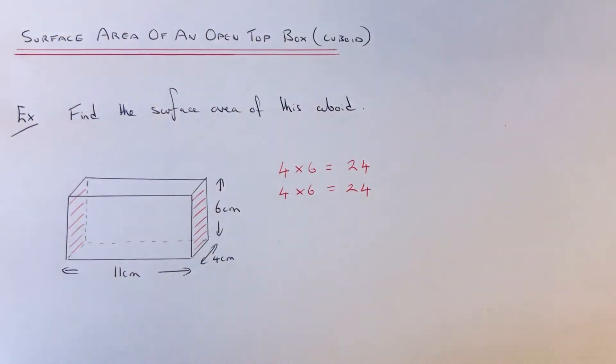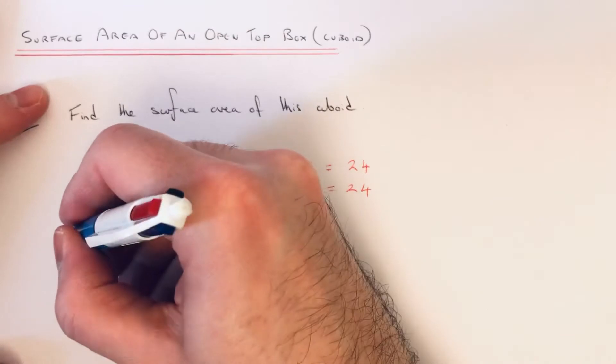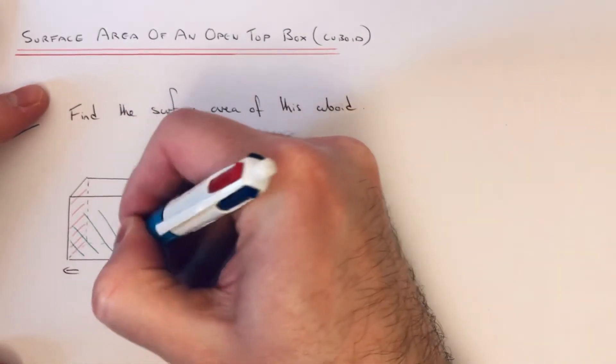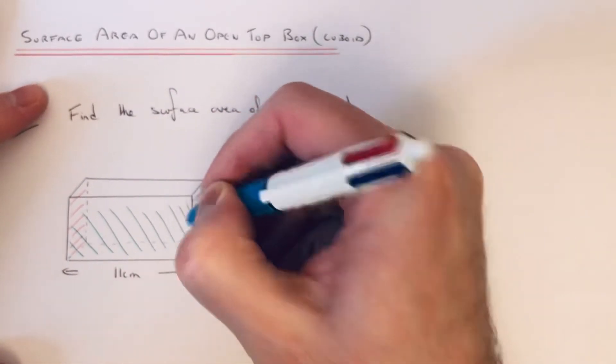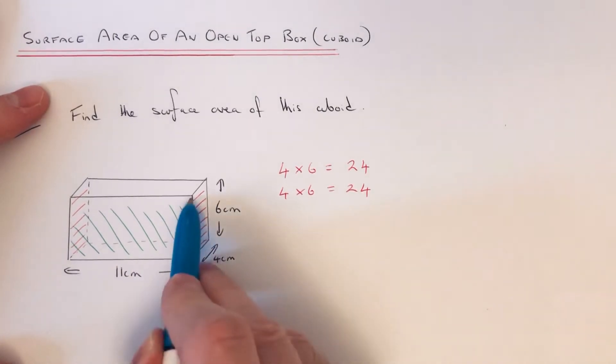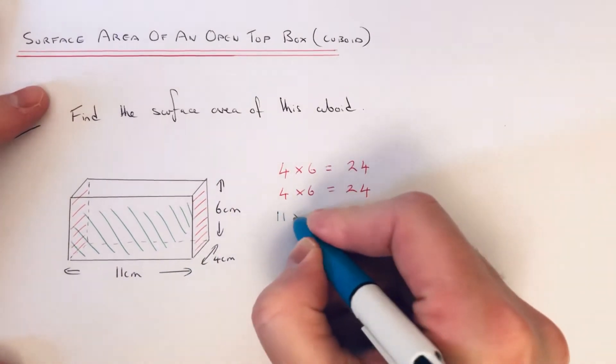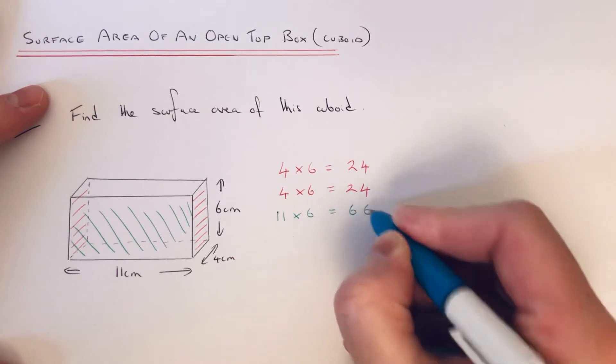So then I'm going to work out the area of the rectangle at the front of the box. This is a rectangle which is 11 by 6, so 11 times 6 is 66.